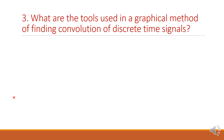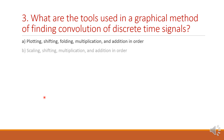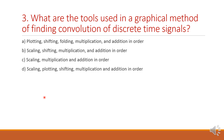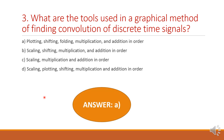Next question: what are the tools used in the graphical method of finding convolution of discrete time signals? Option A: plotting, shifting, folding, multiplication and addition in order. Option B: scaling, shifting, multiplication and addition. Option C: scaling, multiplication and addition. Option D: scaling, plotting, shifting, multiplication and addition. For the graphical method, the first step is plotting, then shifting, then folding, then multiplication, then addition. So the answer is option A.